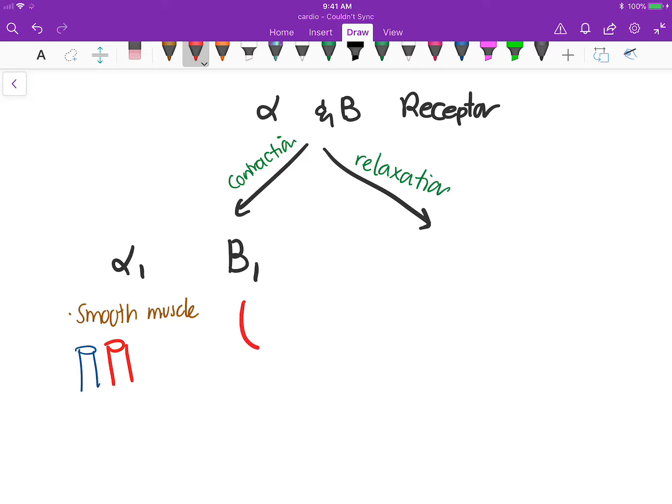Then you have alpha 2 and beta 2 for relaxation. Alpha 2 is more of an inhibitory relaxation - it senses how much norepinephrine is already around and decreases that, sort of decreasing the sympathetic stimulation.